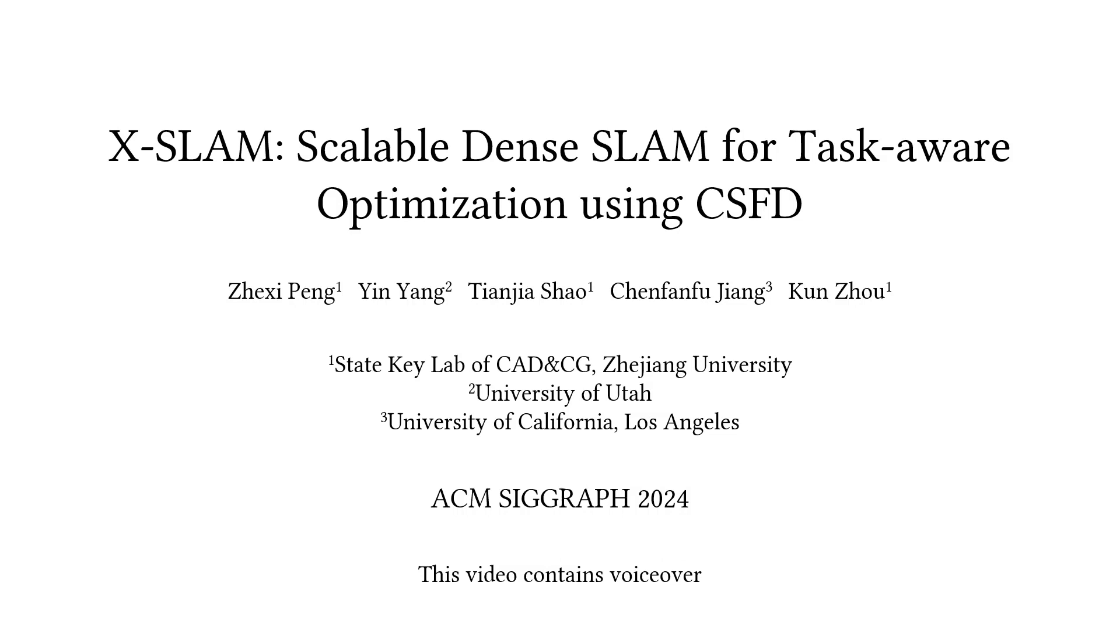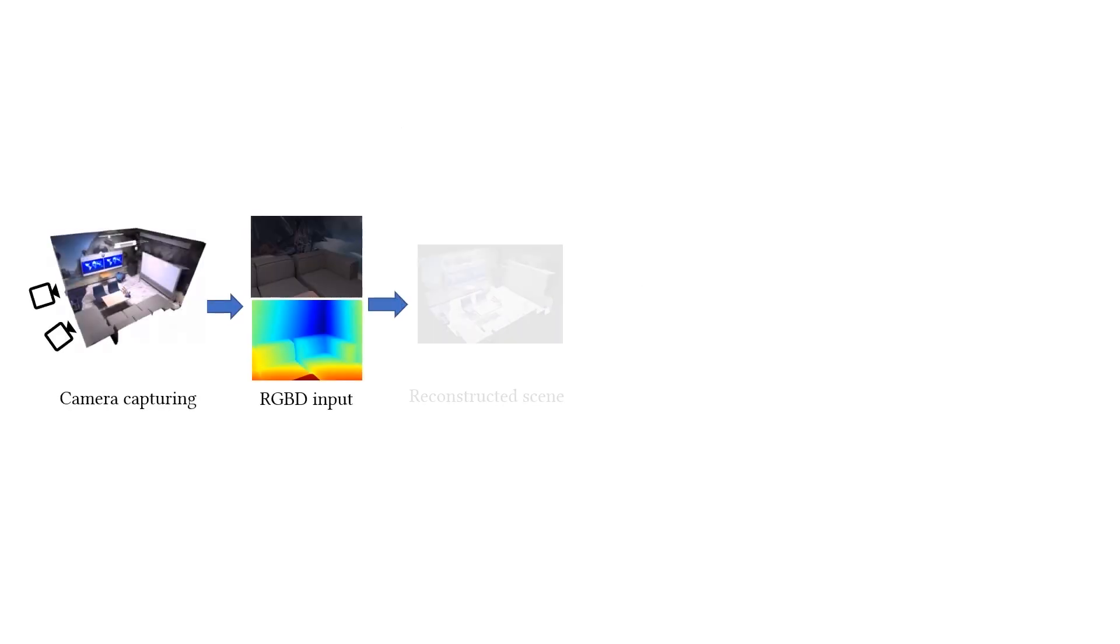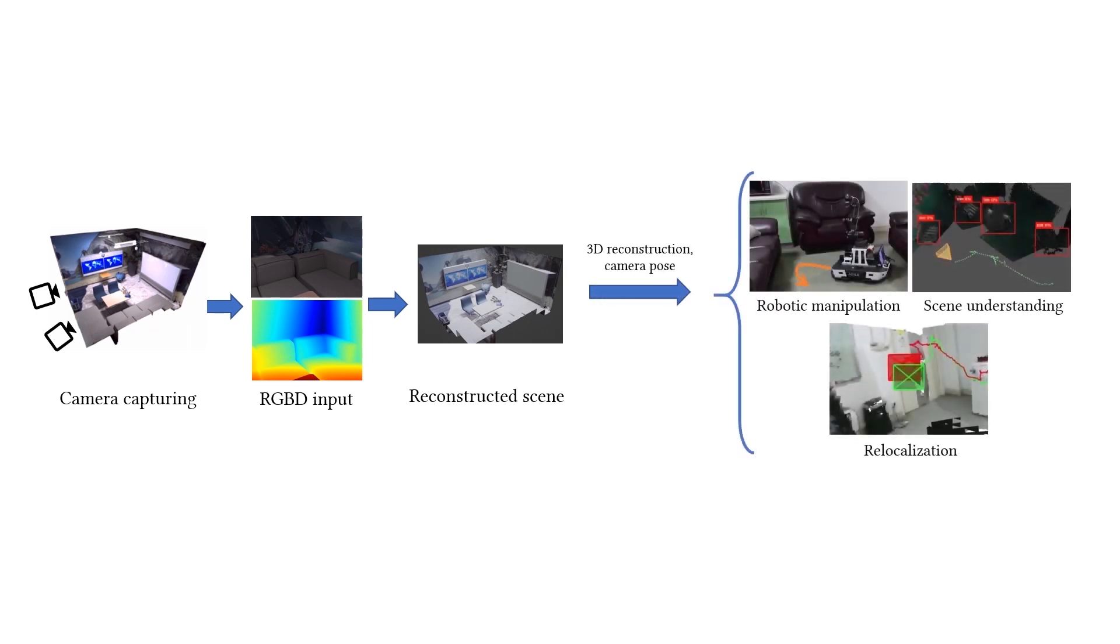In this paper, we present a real-time and differentiable SLAM system that integrates with downstream tasks. A SLAM system accepts RGBD videos and outputs the reconstructed scene. Downstream tasks can be applied based on the scene.